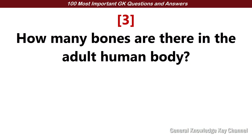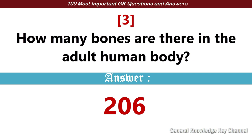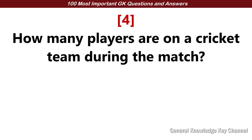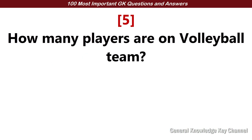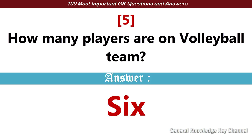How many bones are there in an adult human body? 206. How many players are on a cricket team during the match? 11. How many players are on a volleyball team? 6.